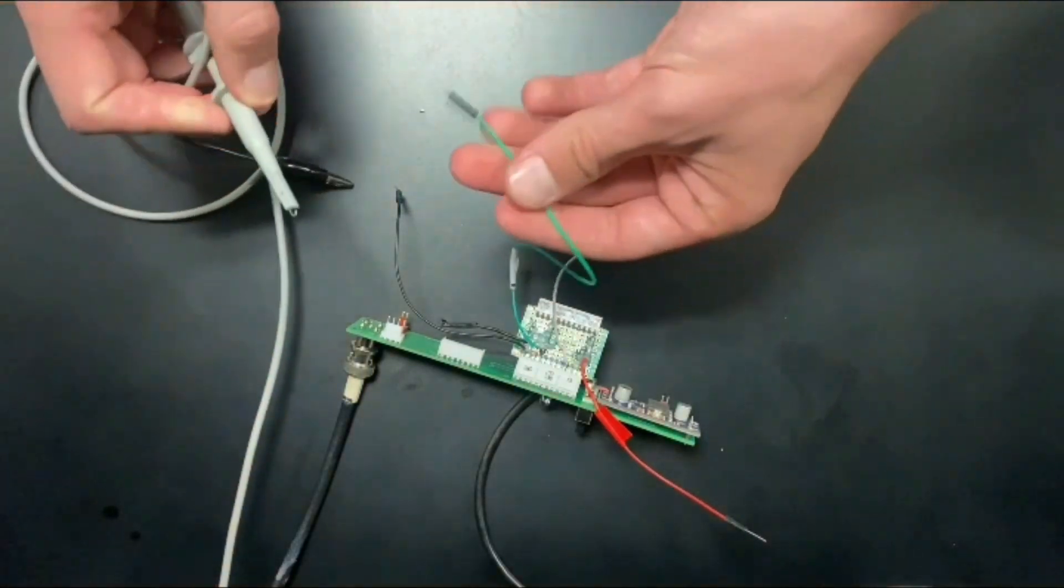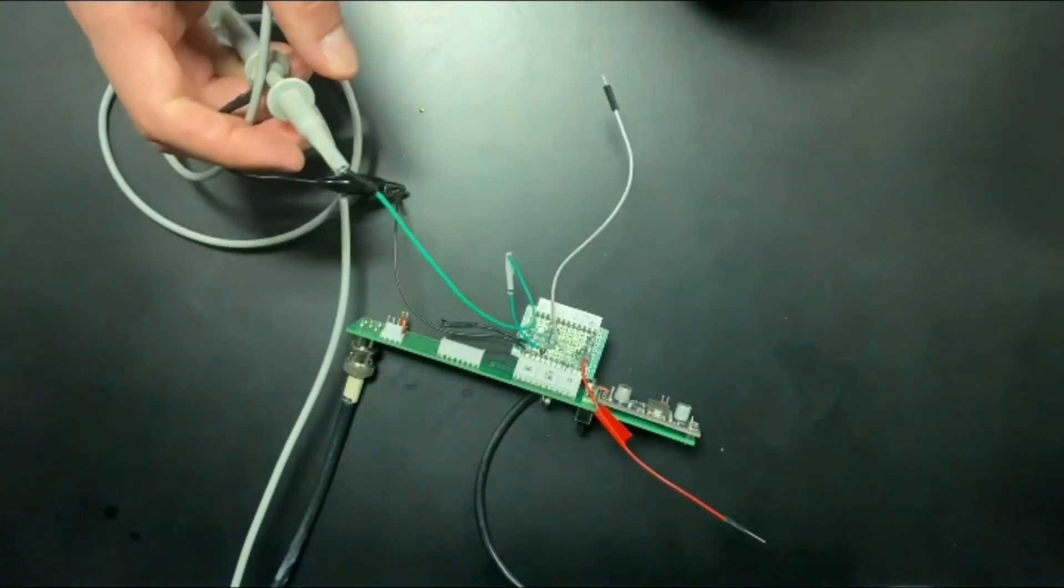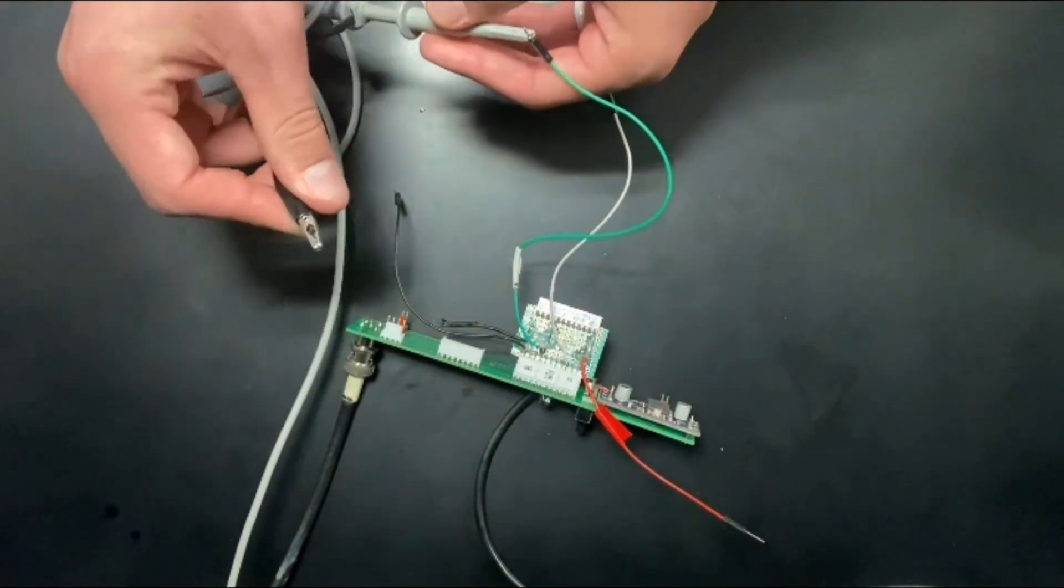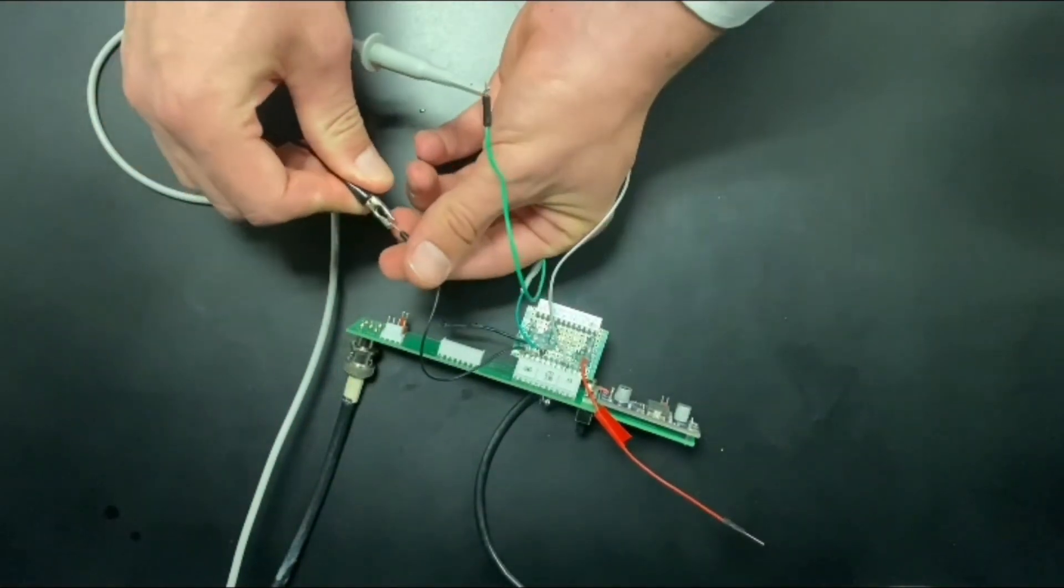If you're using an oscilloscope, make sure that you are connected properly. The probe should be connected to the green wire, and then you'll need to ground the oscilloscope.